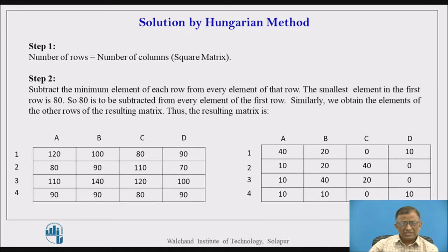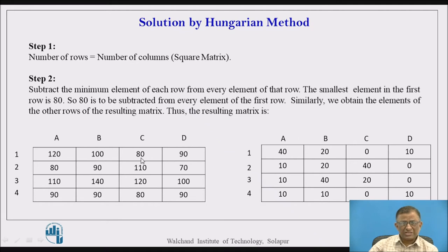To identify the smallest time required by a particular programmer for a particular program, we subtract the smallest element from every element in that row. For example, in the first row, 80 is the minimum element. Subtracting it from all elements gives 0 at position C, indicating minimum time for allocating programmer 1 to program C. So 80 subtracted from 120 gives 40, then 20, 0, and 10. This gives us the row-reduced matrix.